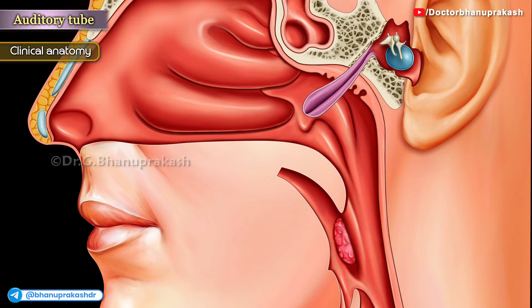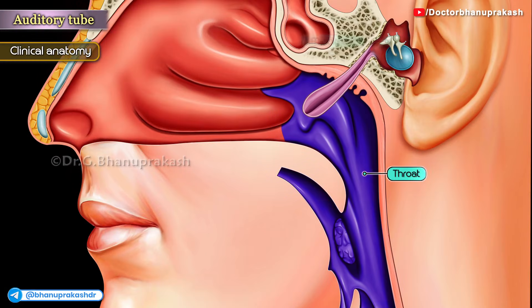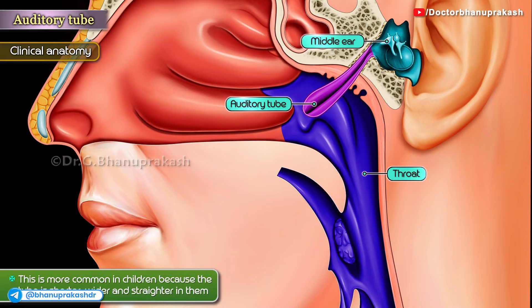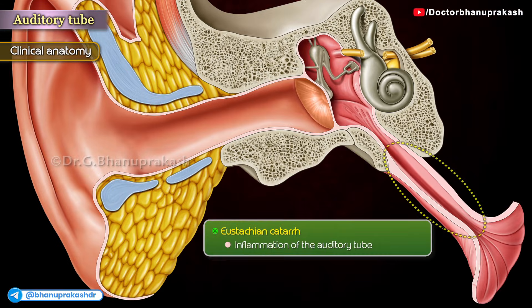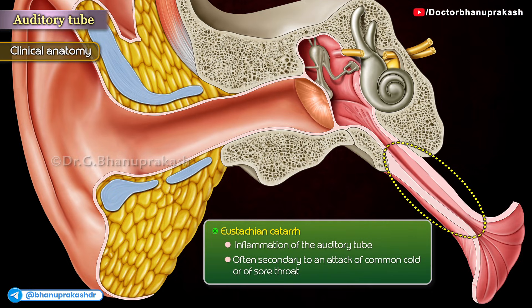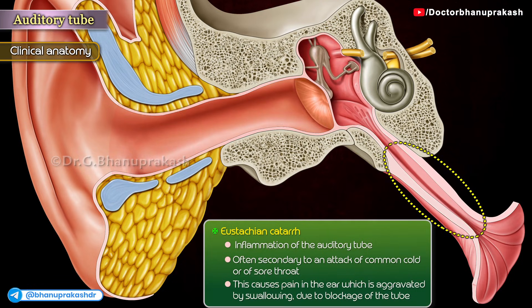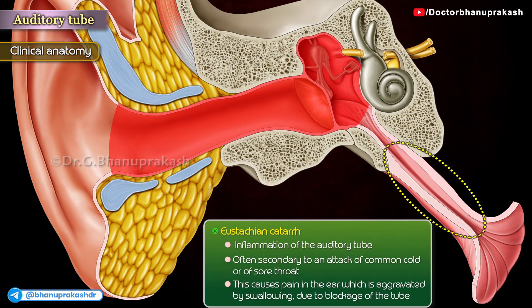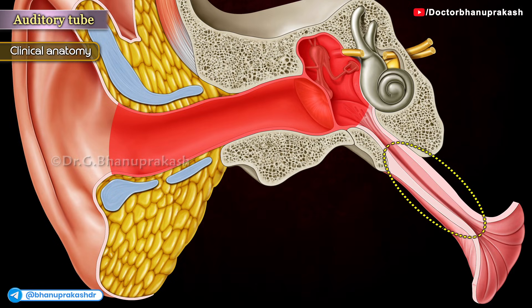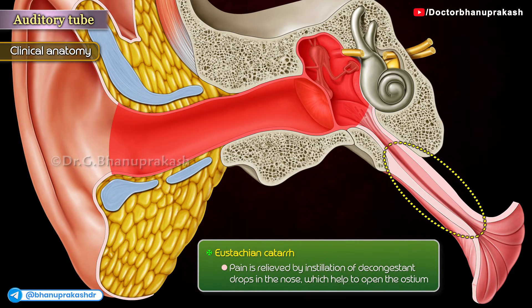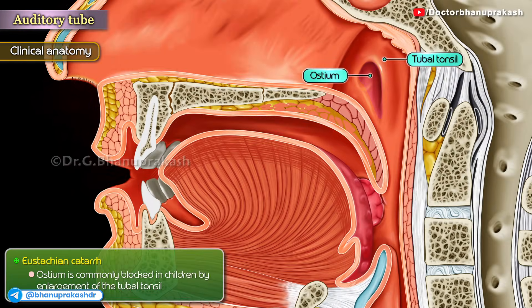Clinical Anatomy: Infections may pass from the throat to the middle ear through the auditory tube. This is more common in children because the tube is shorter, wider, and more straight in them. Inflammation of the auditory tube is often secondary to an attack of the common cold or of a sore throat. This causes pain in the ear which is aggravated by swallowing due to blockage of the tube. Pain is relieved by installation of decongestant drops in the nose, which help to open the ostium. The ostium is commonly blocked in children by enlargement of the tubal tonsil.